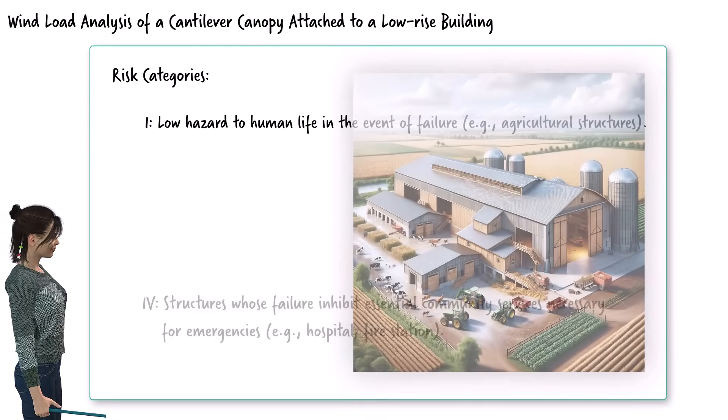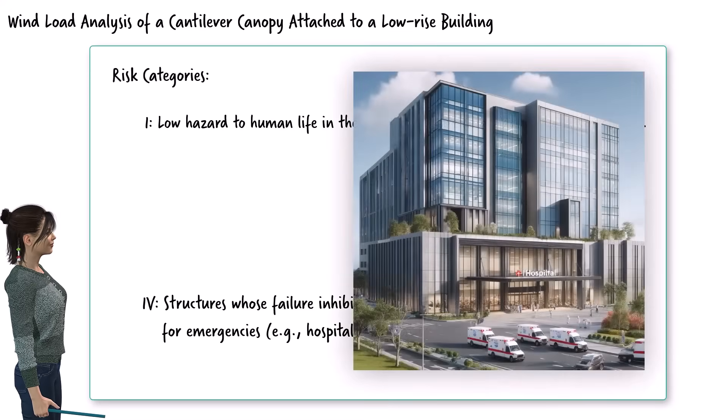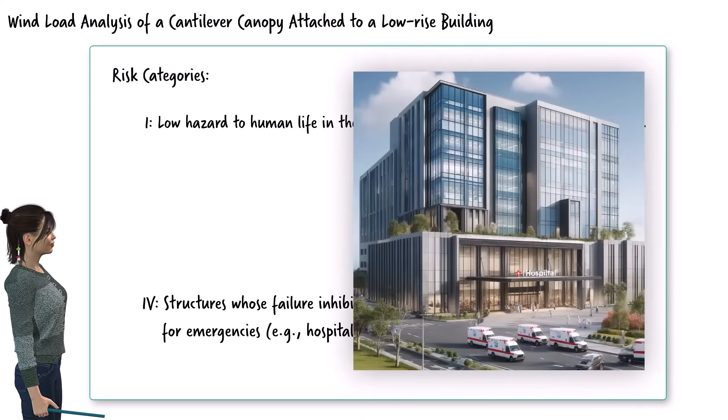At the other end of the spectrum, category 4 includes structures whose failure would inhibit essential community services necessary for emergencies. Examples include hospitals and fire stations.